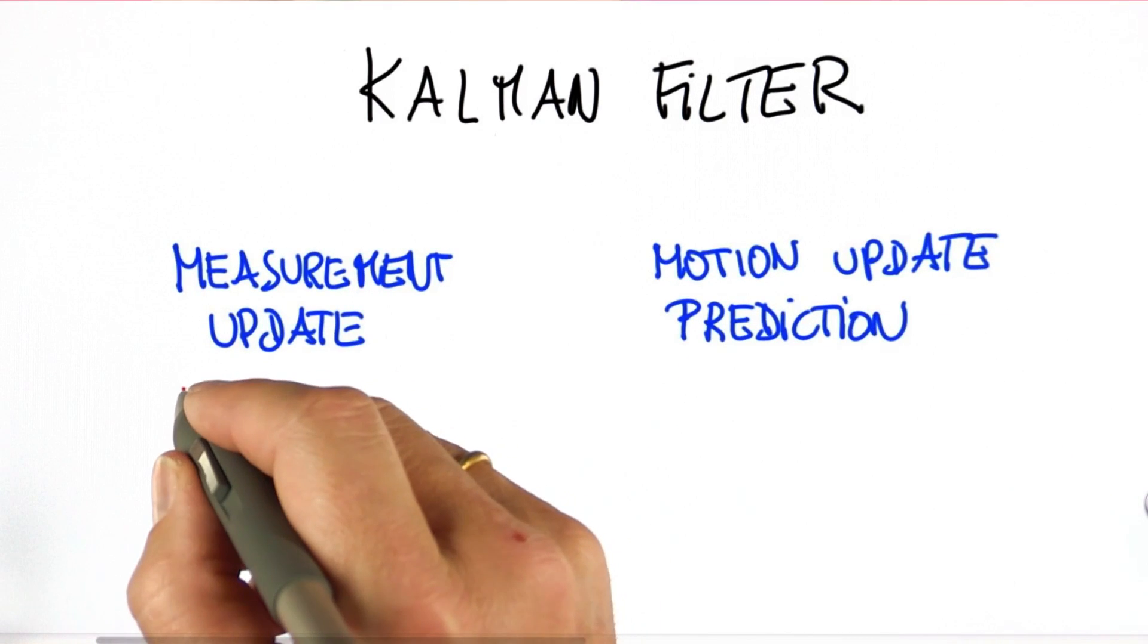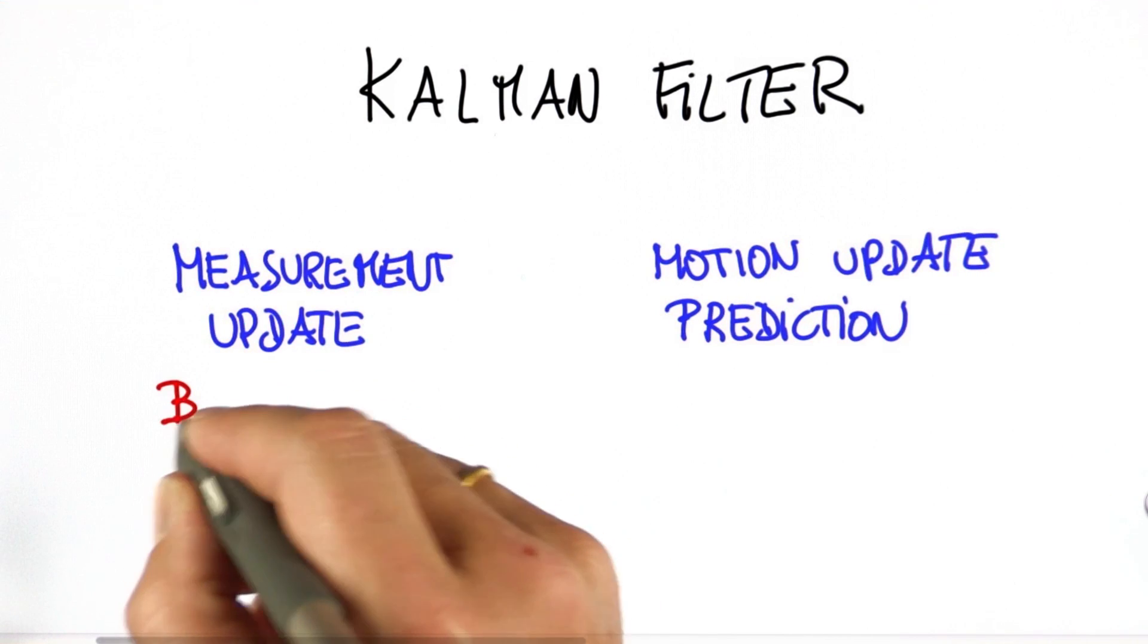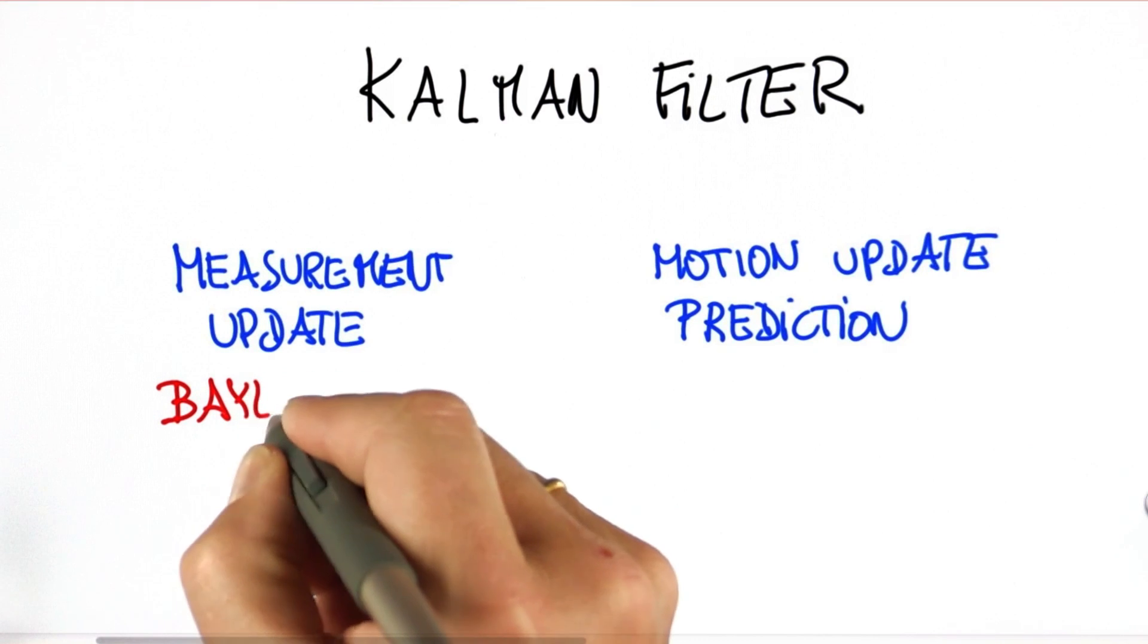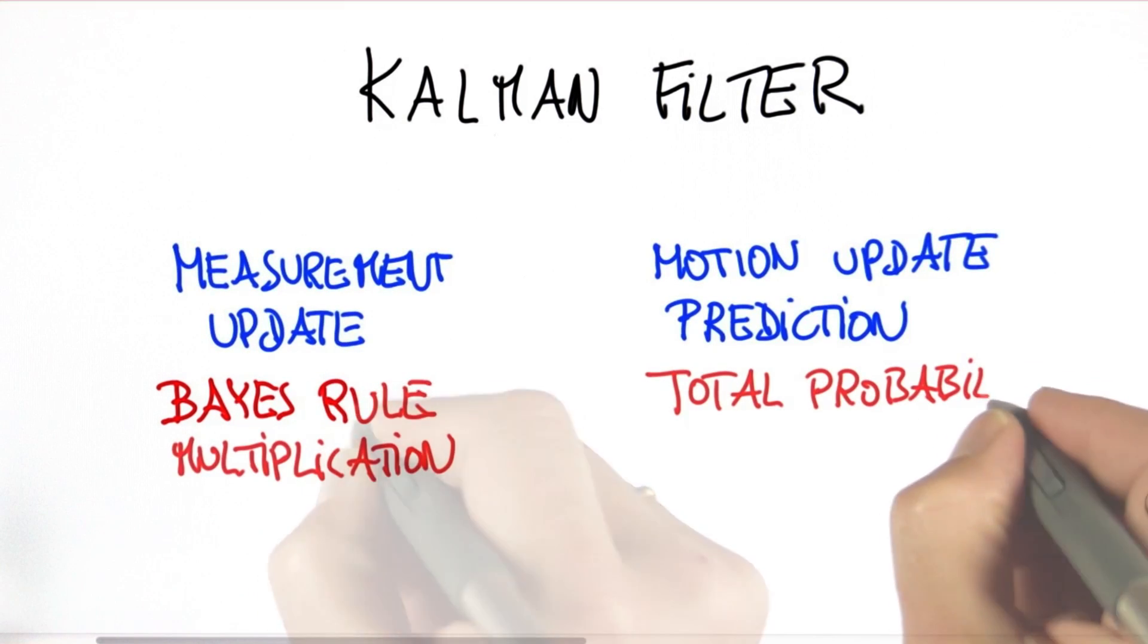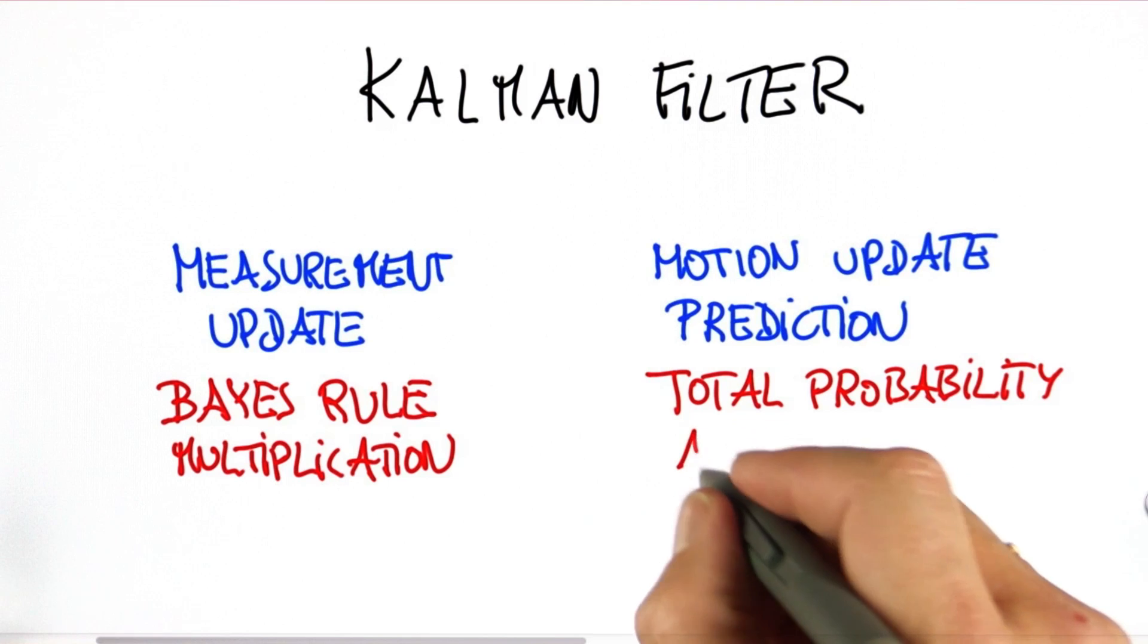We knew there was a measurement update and a motion update, which is also called prediction. And we know that the measurement update is implemented by multiplication, which is the same as Bayes rule. And the motion update is done by total probability or an addition.